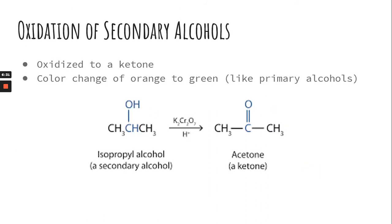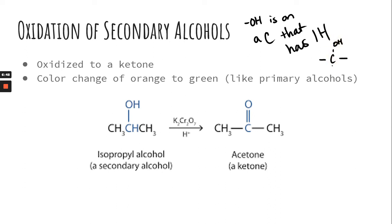For a secondary alcohol, the hydroxyl group is on a carbon that has one hydrogen. It has to be in the middle of a chain, with a hydroxyl group and one hydrogen coming off the carbon — so it would not be at the end of a chain. An example is isopropyl alcohol, the common name for propan-2-ol. The color change is still orange to green because you still need the dichromate oxidizing agent. Group 1 elements are always aqueous, so we can focus on just the dichromate ion.